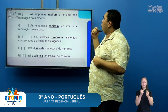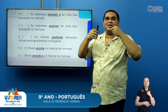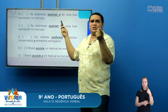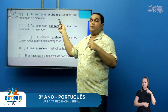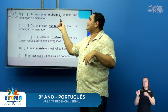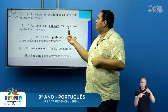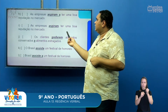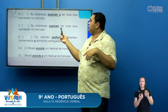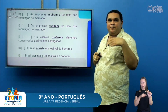Letra H: 'As empresas aspiram a ter uma boa reputação.' O verbo aspirar com o sentido de desejar, almejar — é transitivo indireto, sempre vai receber a preposição 'a'. O 'a' aqui é preposição, não artigo, pois aparece antes de um verbo. Está verdadeiro. Letra I: 'As empresas aspiram ter...' — o verbo aspirar, quando tem o sentido de desejar, é transitivo indireto, então após ele tem que aparecer a preposição 'a'. Como não aparece, a frase está falsa.